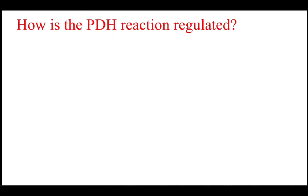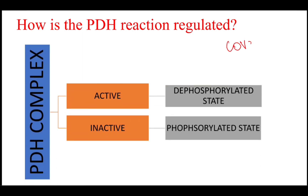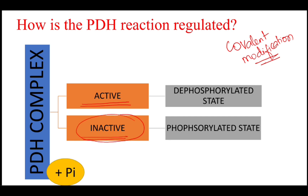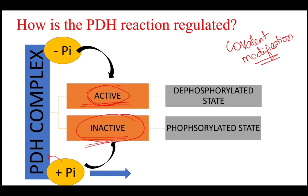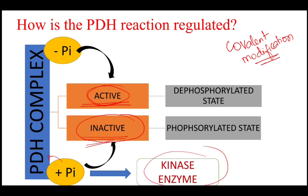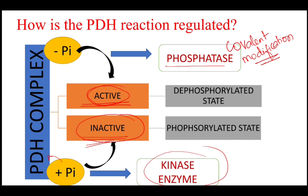The PDH reaction is regulated through covalent modification of the enzyme. The PDH complex mainly exists in two states: an active state and an inactive state. It becomes inactive when a phosphate group is added, and it becomes active when a phosphate group is removed. Addition of phosphate is catalyzed by the enzyme kinase, whereas removal of the phosphate is catalyzed by the enzyme phosphatase — so phosphorylation and dephosphorylation regulates this reaction.